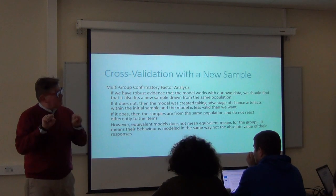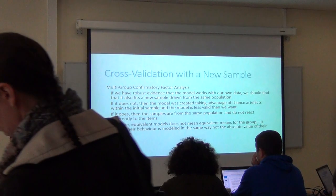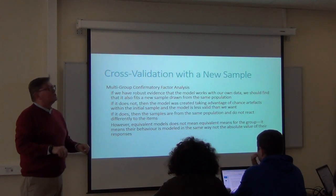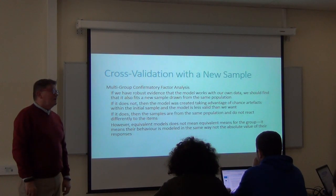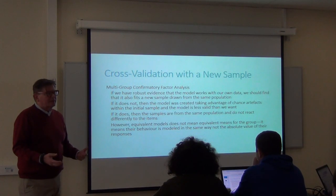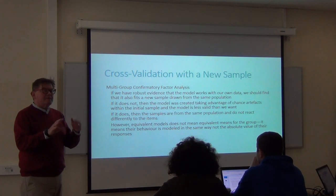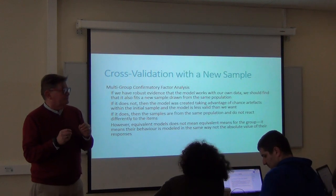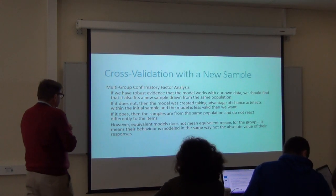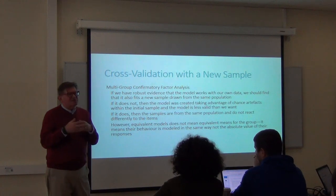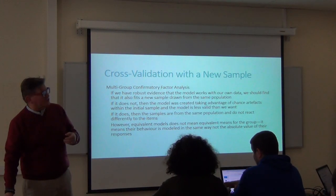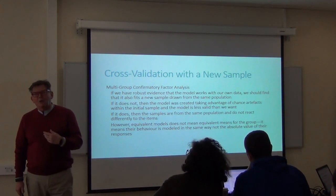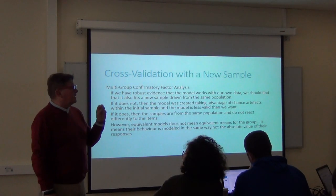If you get two samples from the same population — high school students from the same country — and the model is not invariant, then maybe the model is wrong; it's not stable. But if it is invariant, that's proof that in this population the model works. You're taking advantage of chance in your data to create a model, which is why new instrument development should probably always have two samples from the same population.